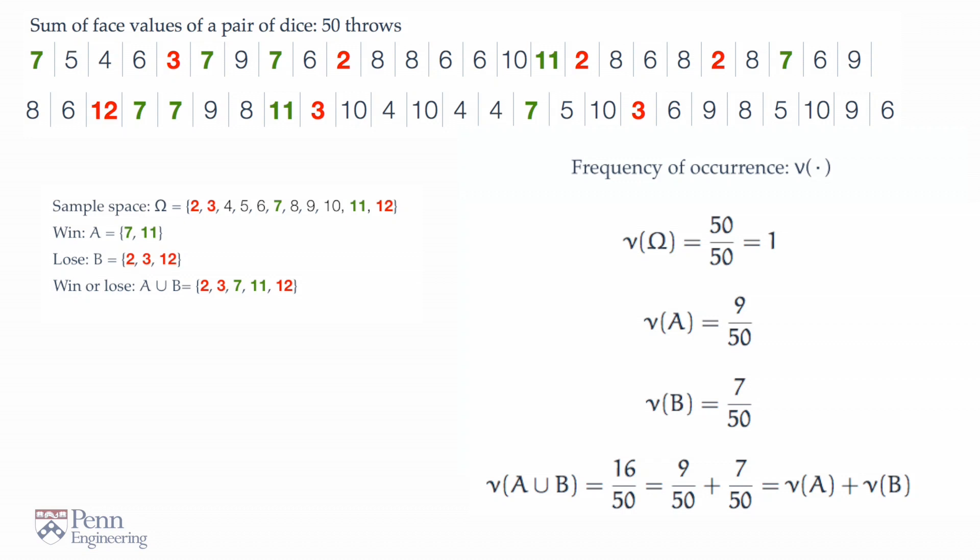And therefore, we find this very interesting additive property. The frequency of A or B is the sum of the frequencies of A and B. Three glorious, elegant, simple, spare properties in this game. The first, normalization.